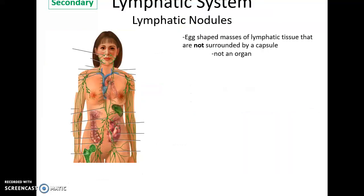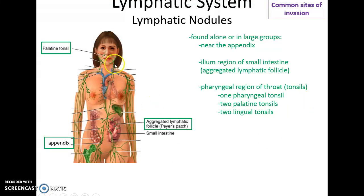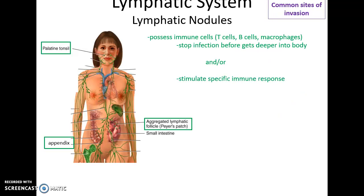The spleen is special because it screens the blood itself for pathogens. Lymphatic nodules are egg-shaped masses of lymphatic tissue with no capsule — technically not organs. They are found in the head and pharynx area as the tonsils: one pharyngeal tonsil, two palatine tonsils, two lingual tonsils. They are also found in large groups around the appendix and around portions of the small intestine, where they're called Peyer's patches. These are all areas where it's common for pathogens to invade the body, so the nodules are there to intercept and respond to those pathogens.